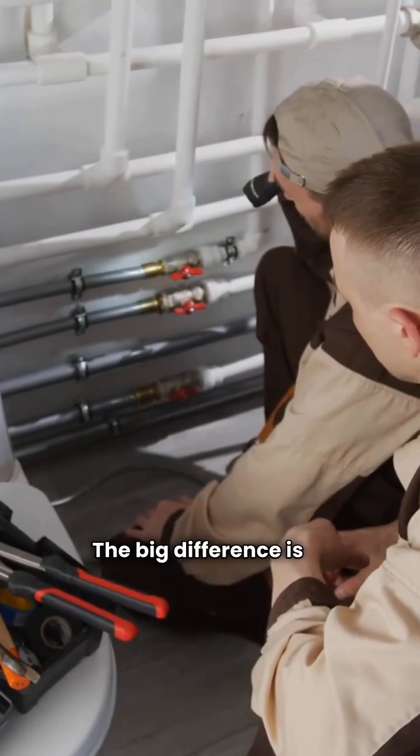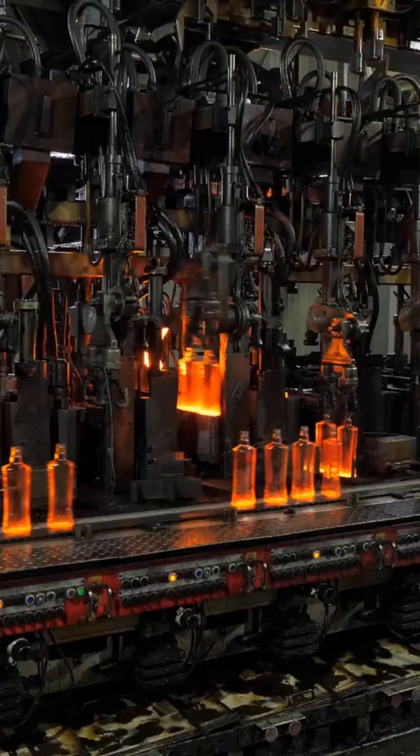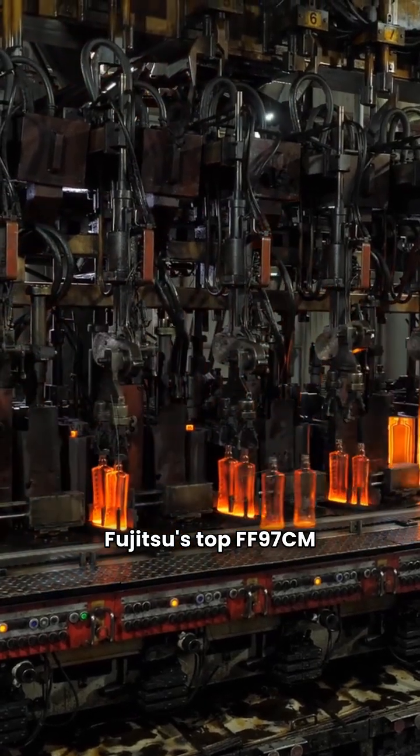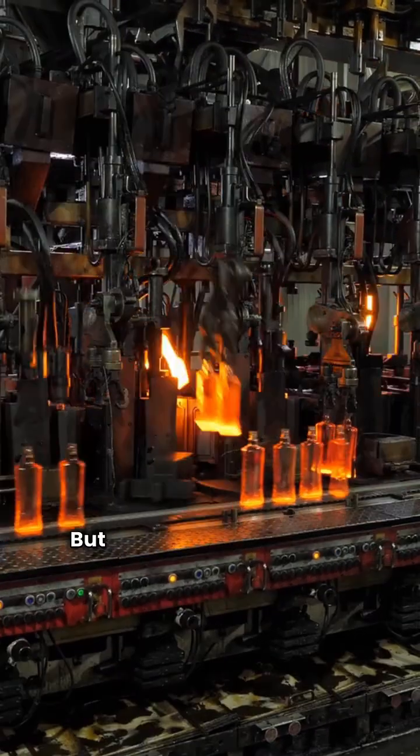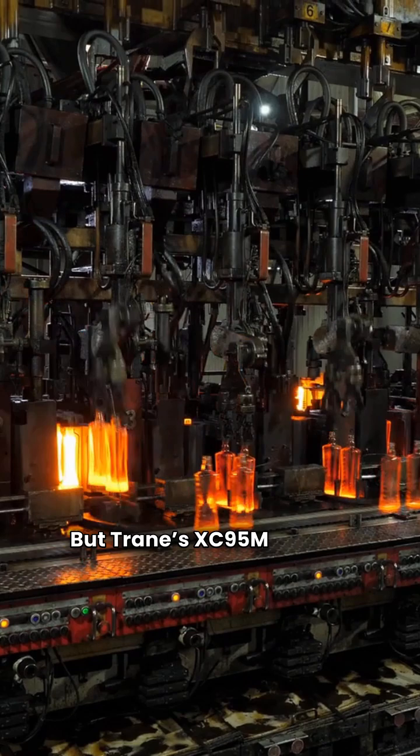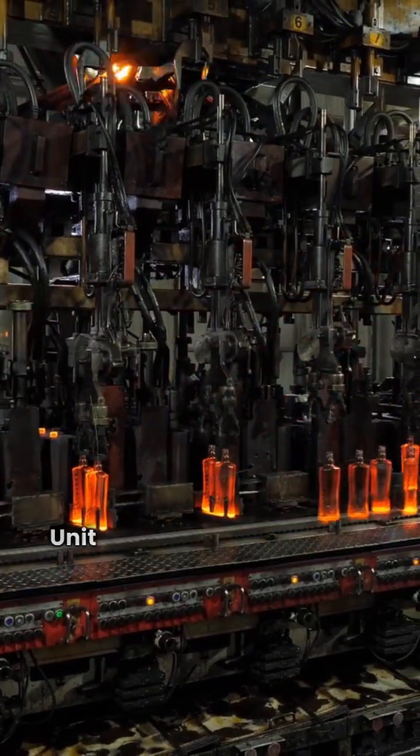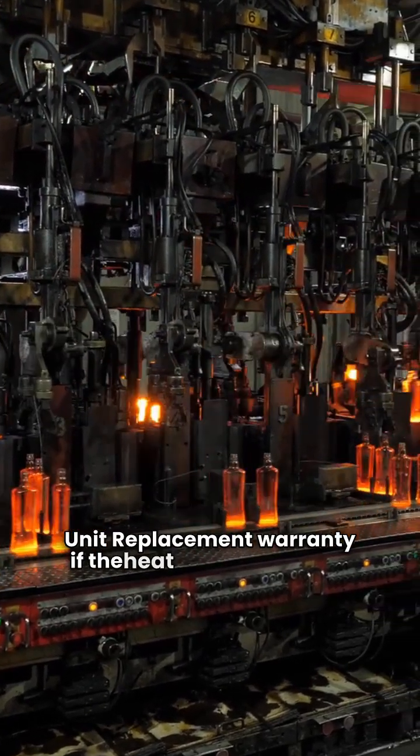The big difference is in the unit replacement guarantee. Fujitsu's top FF97CM model gives you a 10-year unit replacement warranty, but Trane's XC95M steps it up with a lifetime unit replacement warranty if the heat exchanger fails.